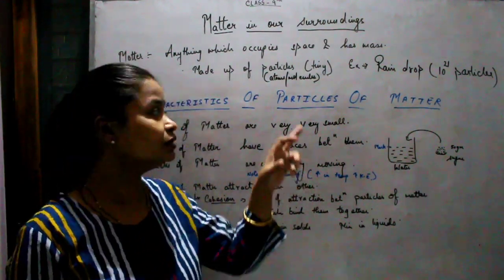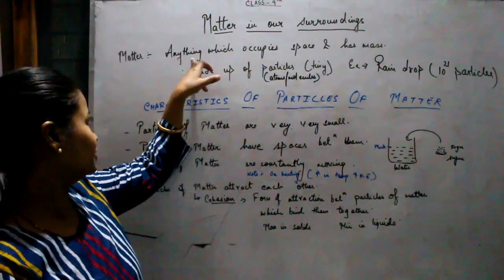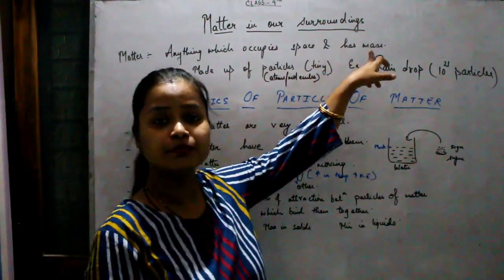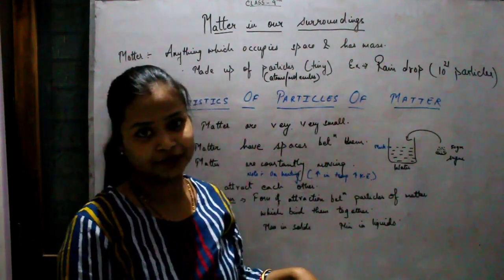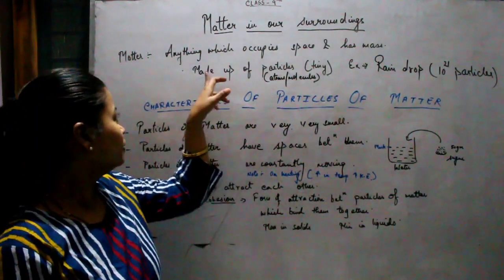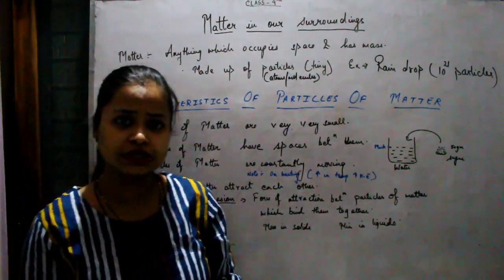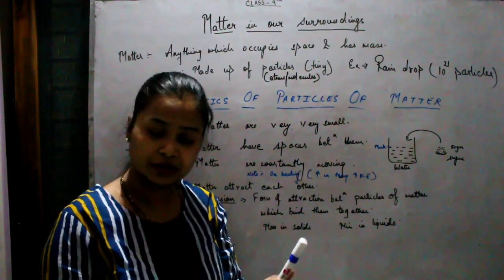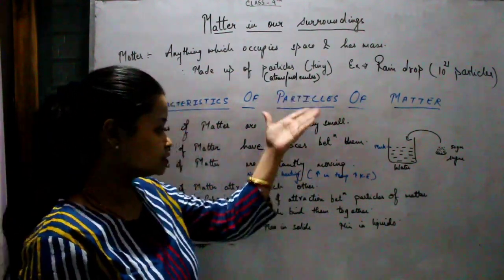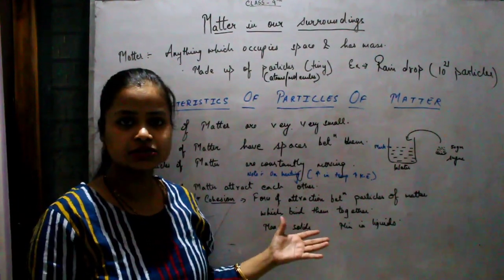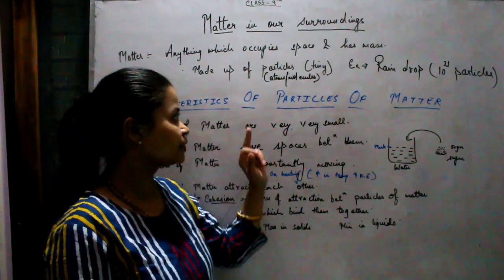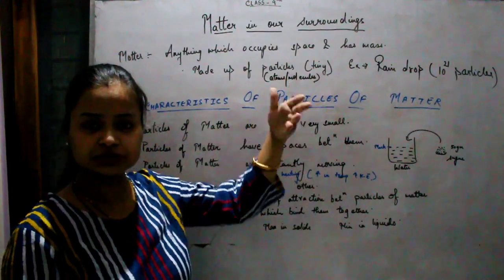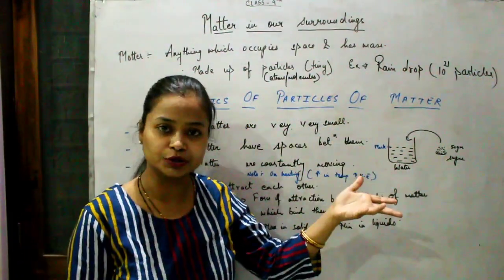Let us define matter. Anything which occupies space and has mass is known as matter. For example, you can take air, water, this camera, this marker, this board — everything around us is nothing but matter only. Matter is made up of tiny particles, say atoms or molecules.